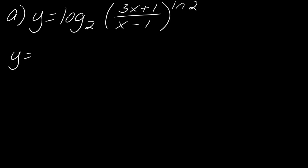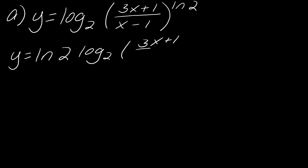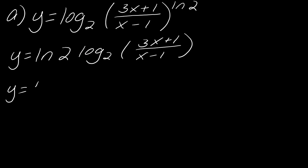I'm literally not taking the derivative yet — I'm just trying to simplify. First things first, I'm going to bring down that exponent. So now I've got the natural log of 2 times log base 2 of (3x + 1) over (x − 1). Now I can use the quotient rule here. One place where I see a mistake a lot: this natural log of 2 is a number — it's a constant that really needs to apply to this entire expression. I'll set up parentheses so I don't forget to distribute this natural log of 2.